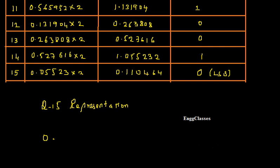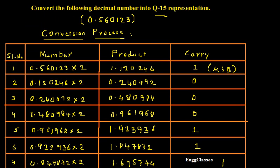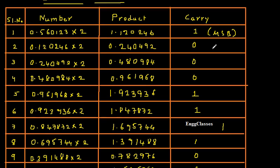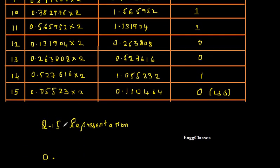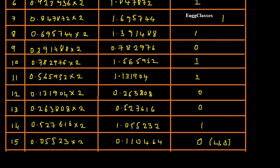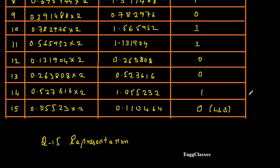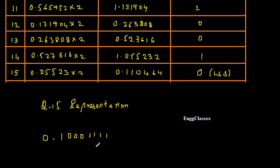The number given was positive. So it starts with 1, then 0, then four 1's. Let me write the answer: 1, 0, and then four 1's. Once that is done, I have got 0, double 1, double 0. So: 0, double 1, double 0, and then I have 1, 0. Ultimately this is the Q15 representation of the given number.